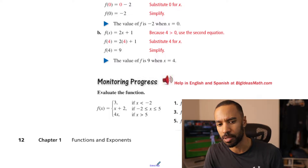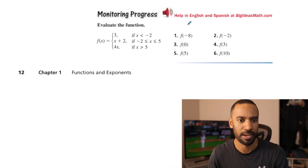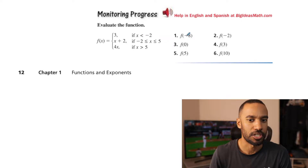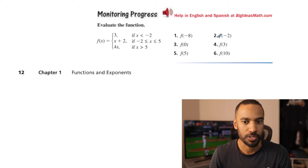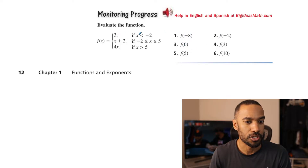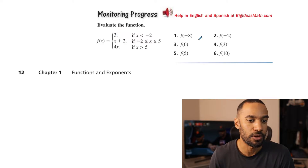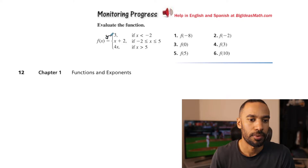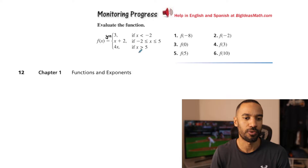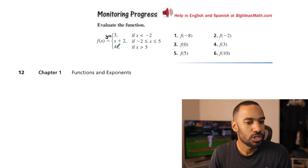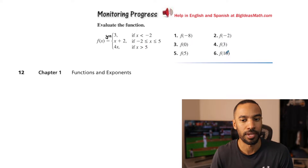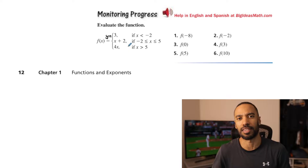Here's another piecewise function example to try on your own. For any x less than negative 2, such as negative 8, you plug it into that equation — but there's no x variable, it's just y equals 3. Then y equals x plus 2 for the middle piece, and y equals 4x for x greater than 5. For 4x, you only substitute values greater than 5, like 10. Four times 10 is 40.